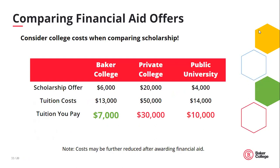We went through examples of students and how aid can be different based on household size and other factors. But what about other colleges and their financial aid offers? You may receive from another private college a $20,000 scholarship and think you are all set, but then you look at their tuition cost of $50,000 and end up with a balance of $30,000 to cover with other aid. Or at a public university, you may be offered a $4,000 scholarship but still have to come up with financing for the remaining balance. It's a good idea to compare all college award letters to get the best deal for you.